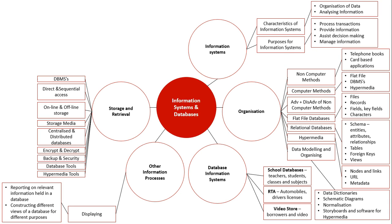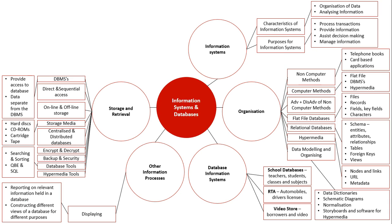We cover the difference between centralised and distributed databases. A centralised database has a file stored in a central location where all nodes access it, which can lead to bottlenecking. In a distributed approach, multiple copies of the file are placed at different locations, synced together, reducing bottlenecking chances. If one site goes down, other sites can still use their versions. We also cover encryption and decryption for secure data transfer, and database tools such as query by example and structured query language for running queries, plus hypermedia tools.